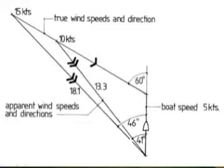is an apparent wind, and that apparent wind, in this case, has been worked out to be 13.3 knots coming in at an angle of 41 degrees.